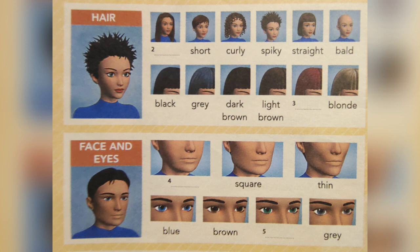Face and eyes. Round. Square. Thin. Blue. Brown. Green. Gray.